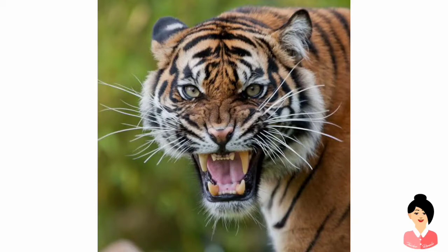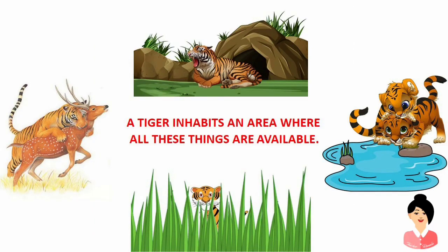My dear children, a tiger inhabits a place only where his requirements are fulfilled. Let's check the basic necessities of a tiger. First, a tiger has stripes on his body. This helps him to catch his prey like deer, bison and nilgai. He requires a water hole which never dries up, especially in summer. His shelter is a cave, so he searches a grassland and a place in hills and mountains.